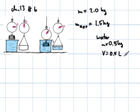And because the object is submerged, that means now that an equal amount of water is being displaced. So V equals 0.5 liters.